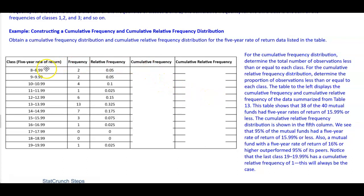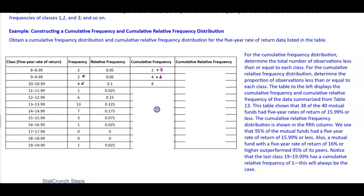The cumulative frequency for the first class is 2. Then we add 2, which is the next frequency, giving us 4. The next one is 4, so we add 4 plus 4, which gives us 8. Then the next frequency is 1, so 8 plus 1 gives us 9. The next frequency is 6, so 9 plus 6 gives us 15.